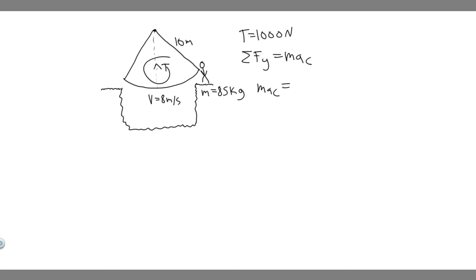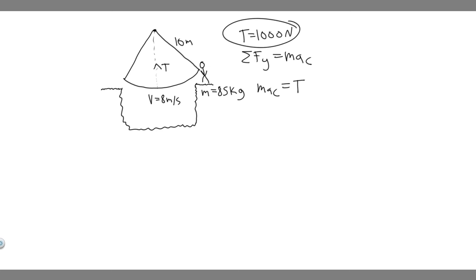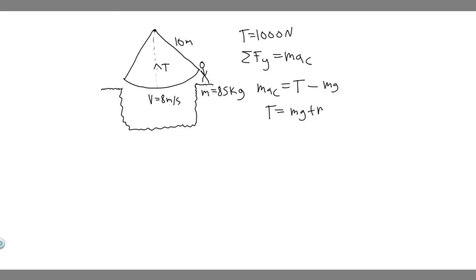What forces do we have? We have the tension force T acting upward — keep in mind 1000 newtons is just the maximum; we're going to calculate the actual tension. Then we have mg acting downward. So: T − mg = m × a_c. Solving for T gives us T = mg + m × a_c, which factors to T = m(g + a_c).